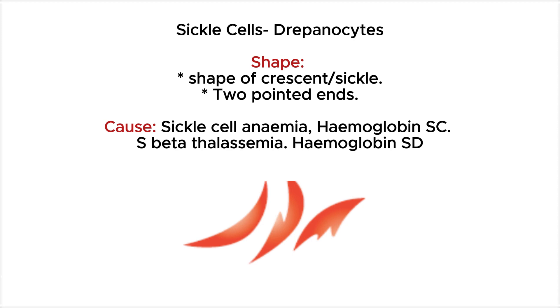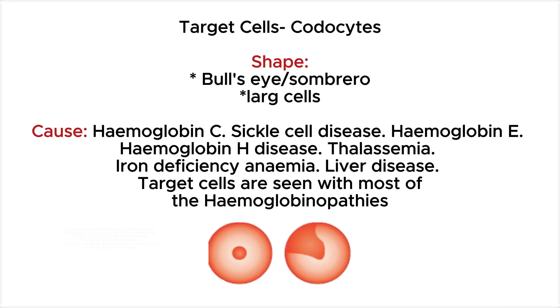Sickle cells occur as a result of a defect in hemoglobin where the amino acid valine is exchanged for glutamic acid, giving rise to a defective hemoglobin S. This is seen in sickle cell anemia, hemoglobin SC, S-beta thalassemia, and hemoglobin SD.